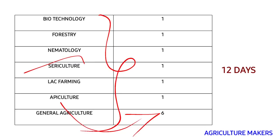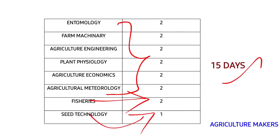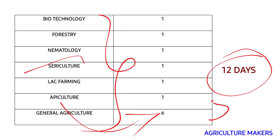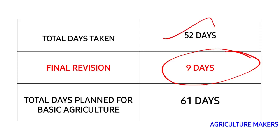In total, we have taken 25 days plus 15, which equals 40 days, plus 12, making 52 days for total completion of your basic agriculture. We have 9 remaining days in July and August. Those 9 days are for your final complete revision of everything you have read in the last 52 days — completely revising all the basic agriculture in those 9 days. So totally it is 61 days of planning for general agriculture in July and August.